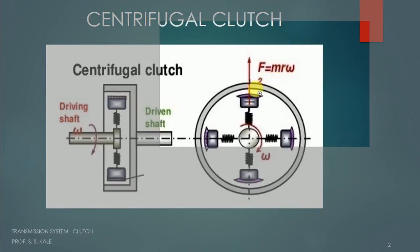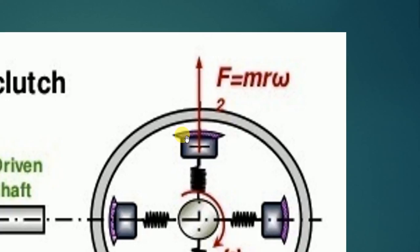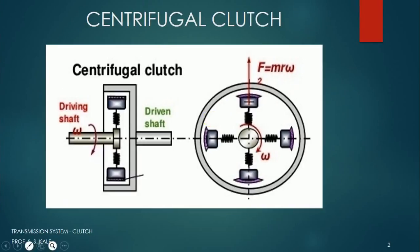This friction material is made up of cork, cotton, or leather, which have a high coefficient of friction. When the friction material comes in contact with the outer casing, only then power will be transmitted. The current position of this clutch is disengaged — even though the driving shaft is rotating, the power will not be transmitted because the speed is less, centrifugal force is less, and the movement of this part is restricted.